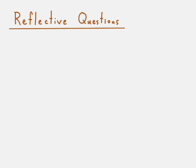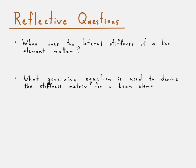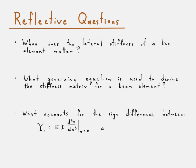That brings us to our reflective questions. The first is: when does the lateral stiffness of a line element matter? Compare this with a truss element — think about how a truss element represents a two-force member, and consider when lateral stiffness matters. The next question is: what governing equation is used to derive the stiffness matrix for a beam element? The final question is: what accounts for the sign difference between the governing equation applied for the shear load at node one versus node two? That concludes this presentation on the stiffness matrix for a beam element.